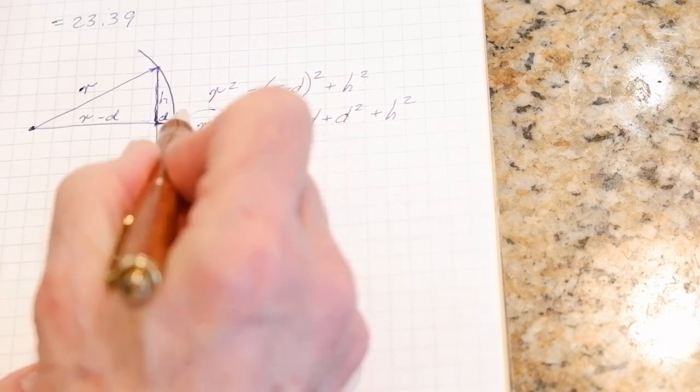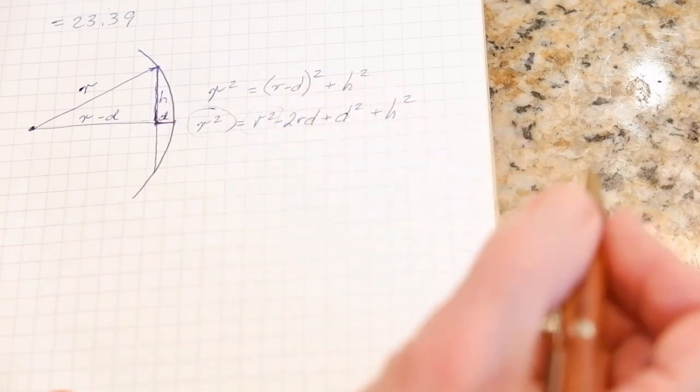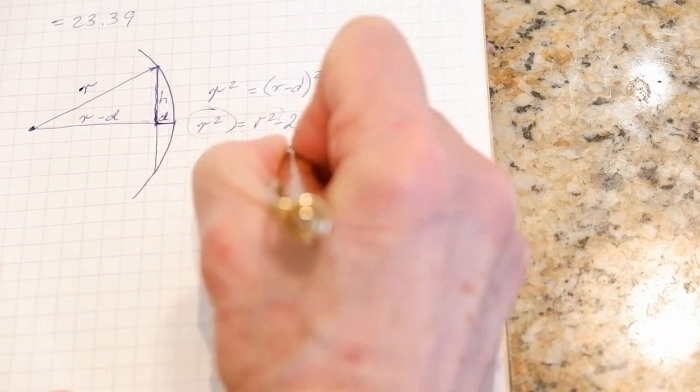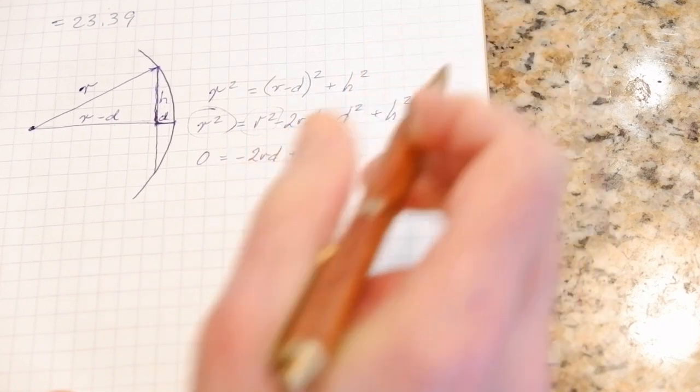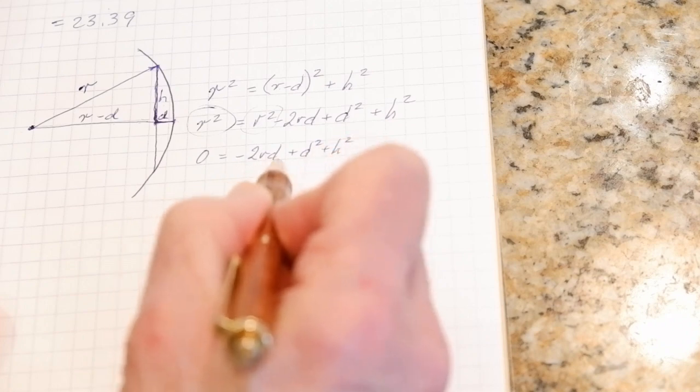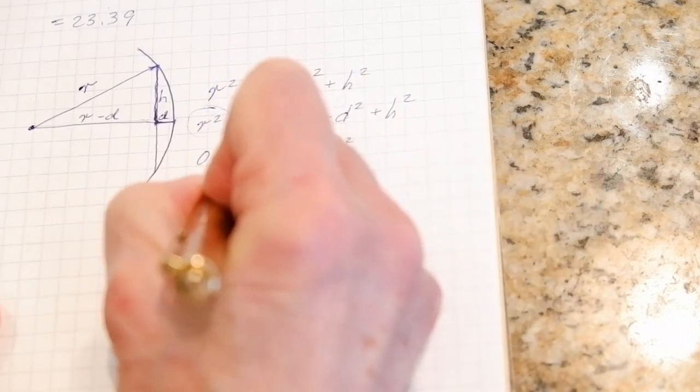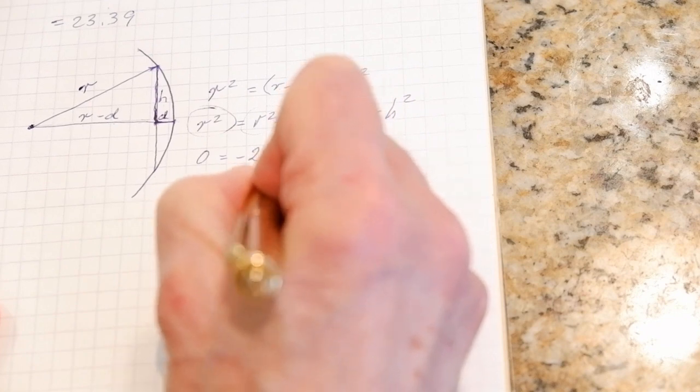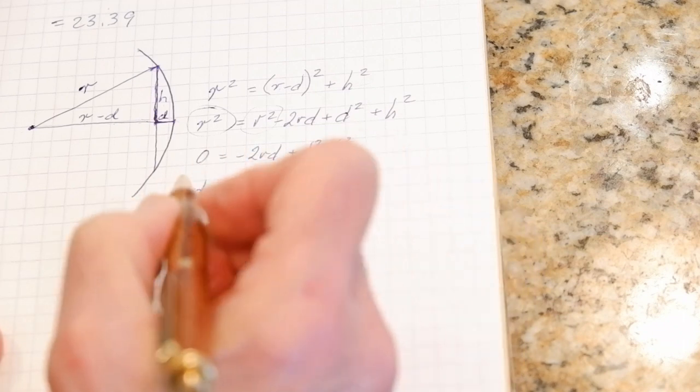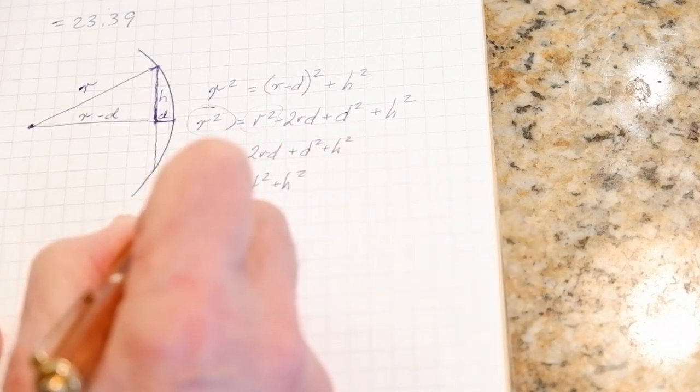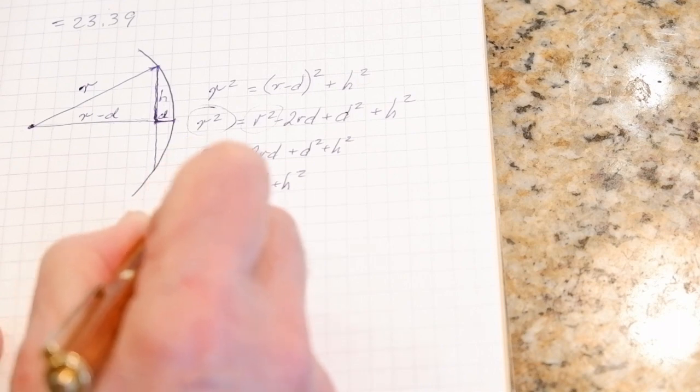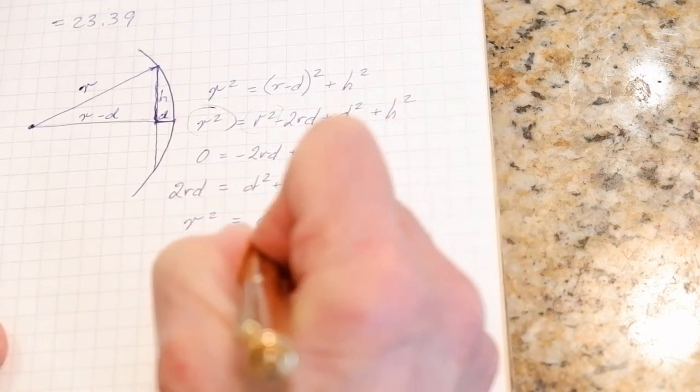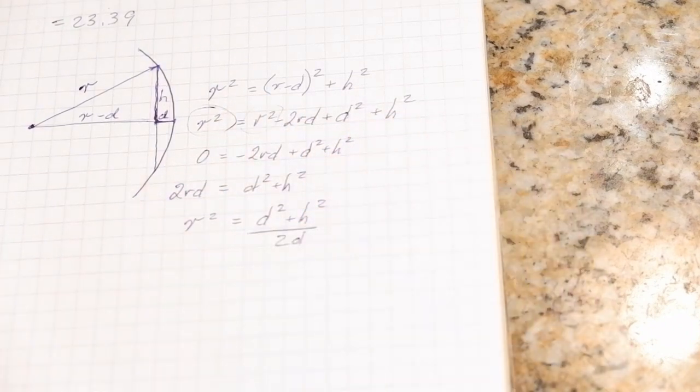Well, we've got an r squared over here and an r squared over there, so let's start by subtracting r squared from both sides. So 0 is equal to negative 2rd plus d squared plus h squared. So 2rd is equal to—of course this one now gets cancelled out if you add 2rd to minus 2rd—is equal to d squared plus h squared. And what we're interested in is the radius, so here's the radius over here. If we now divide both sides by 2d, we'll have what we're looking for.